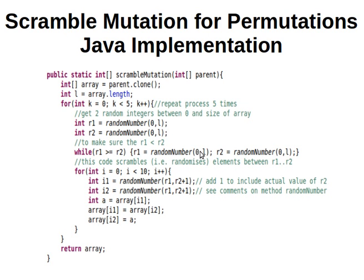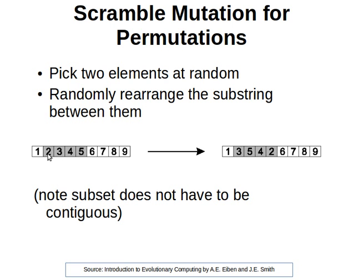Once we have valid r1 and r2, we loop 10 times. In each iteration, we choose two random numbers between r1 and r2 inclusive — this is why we use r2 plus one — and then swap the elements at those indices. We repeat this 10 times to make sure the elements get randomized.